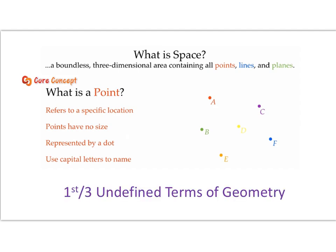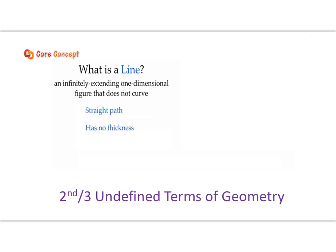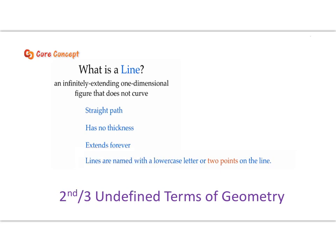This is our first of three undefined terms of geometry. Our second undefined term is a line. A line is an infinitely extending one-dimensional figure that does not curve — a straight path with no thickness that extends forever. We usually name our lines with a lowercase scripted (cursive) letter, or by two points on the line.